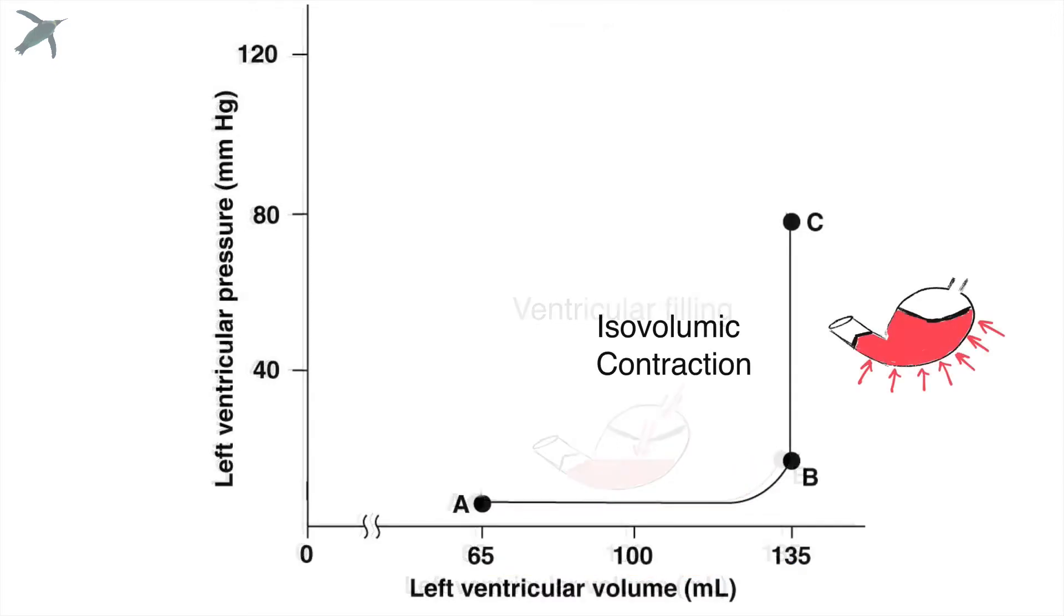From B to C, that's the big change in pressure. Now, notice the volume hasn't changed. That's why we call this isovolumic. Iso means same. Volume refers to the volume of blood inside. So from B to C, we're squeezing, but the blood isn't going anywhere. And I'm going to explain to you why that's such a big deal.